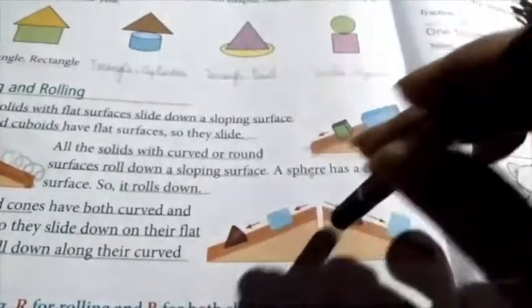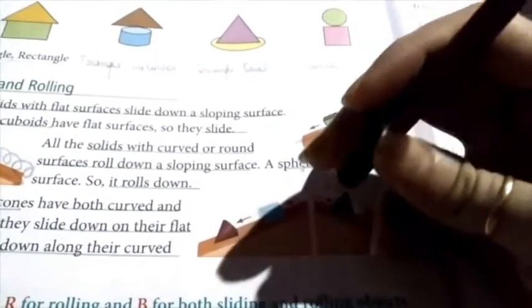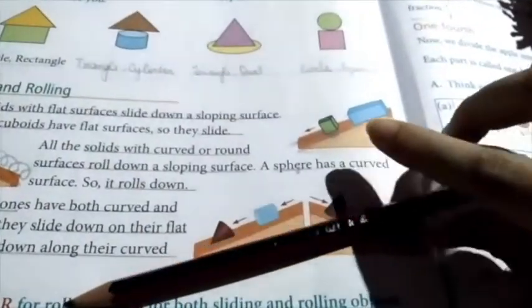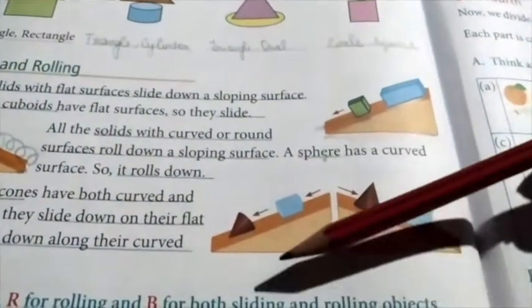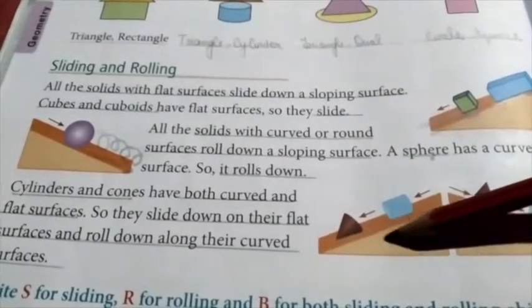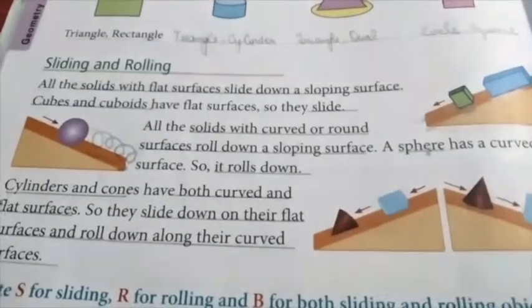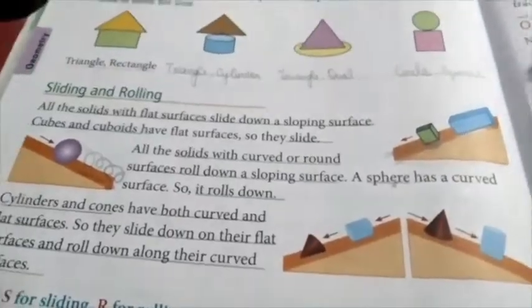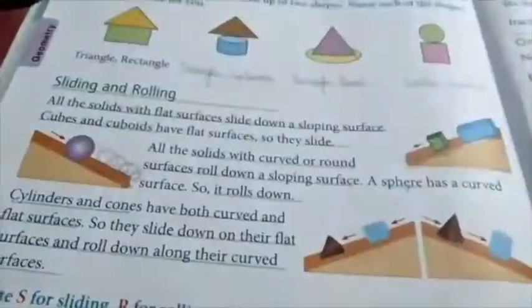When you keep the cylinder with the flat surface down it will slide, but when you keep it with the curved surface down it will roll. So when the surface in contact is curved it rolls, and when the surface in contact is flat it slides along the slanting area. Now you understand sliding and rolling — let us move to the last part.